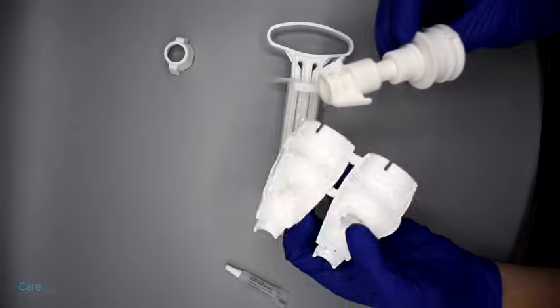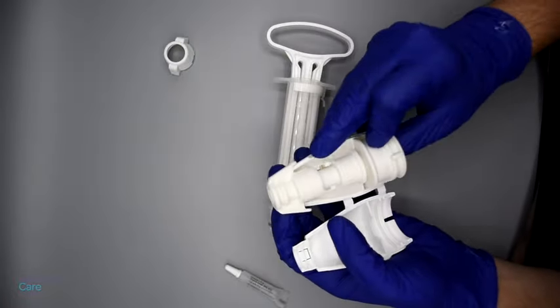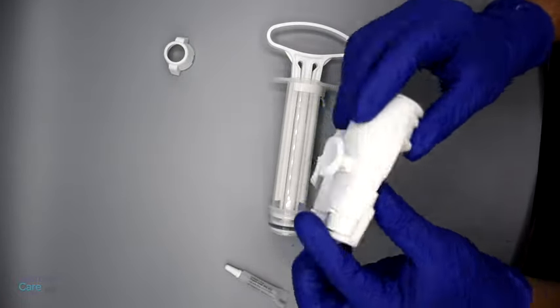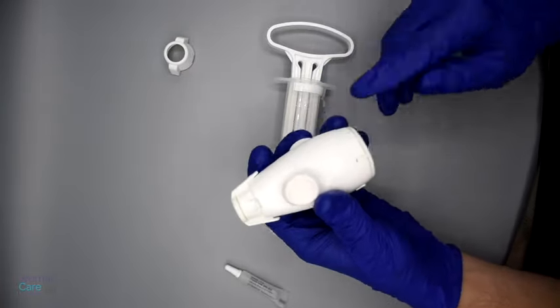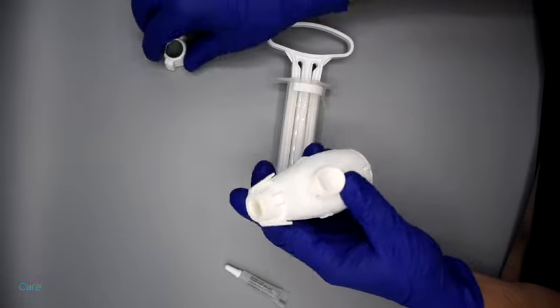Place valve liner inside the valve by aligning the internal ridges. Close the valve and ensure the tabs extending from the sides of the liner are on both sides of the valve.